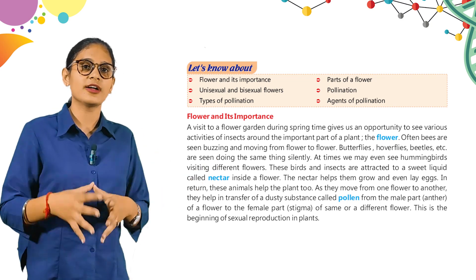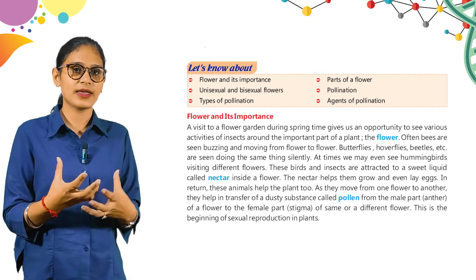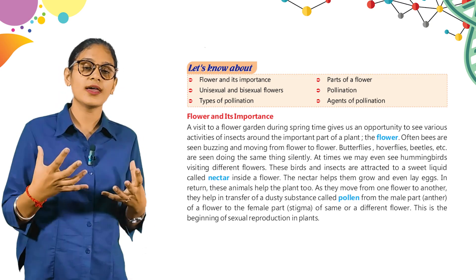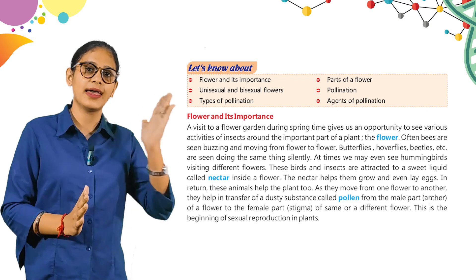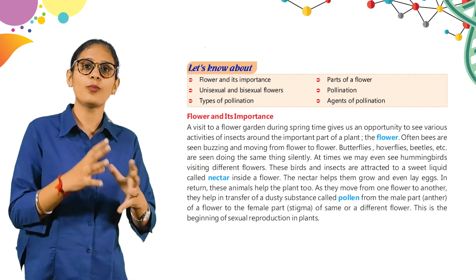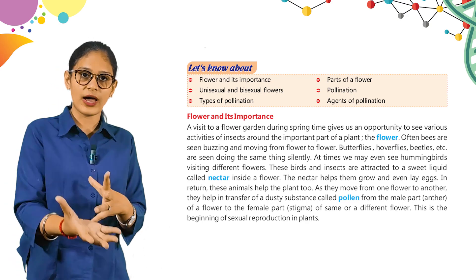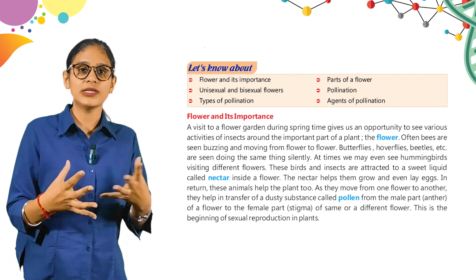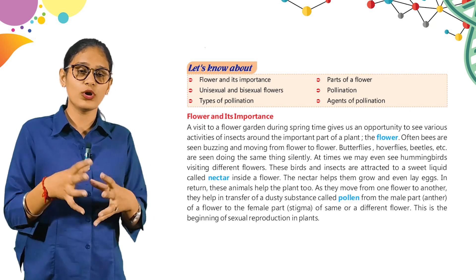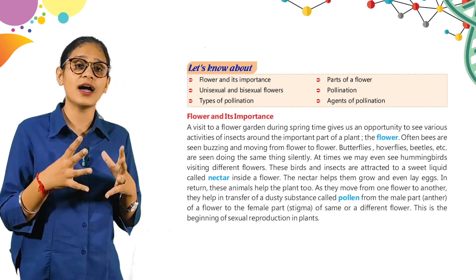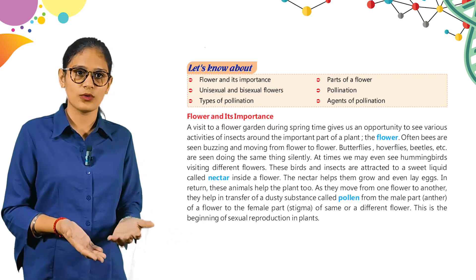What do they do? They move from flower to flower and take liquid juice, which we call nectar. Students, how do they help our plants? Our plants produce a substance called pollen grains. The male part of the flower is the anther, and pollen grains are transferred from the anther to the female part, the stigma. The female part can be in the same flower or a different flower — for example, pollen grains from a rose flower transferred by an insect on a marigold flower. This is the beginning of sexual reproduction in plants.